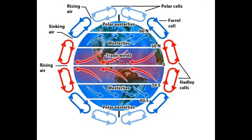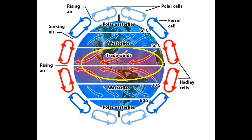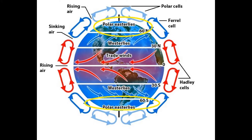Global convection currents are divided into three major regions. First, the tropical region begins at the equator and extends to about 30 degrees latitude. Next, the temperate region extends from there to about 60 degrees latitude. Lastly, the polar region extends from there to the north pole, 90 degrees latitude.